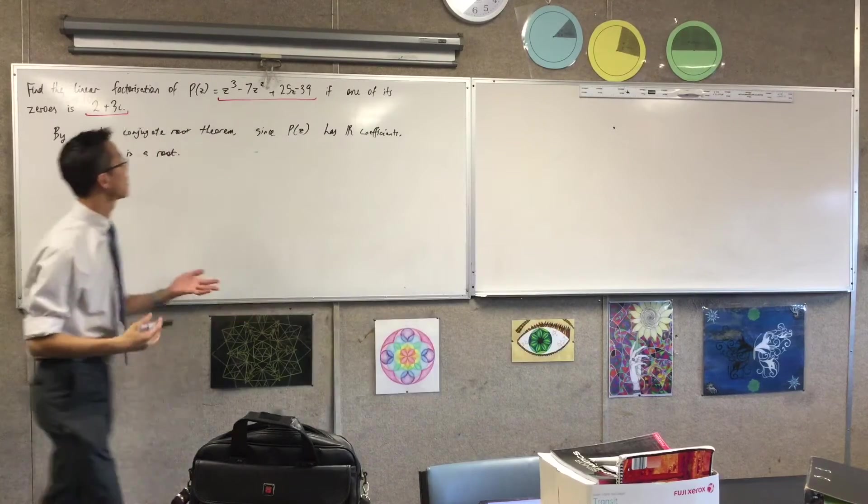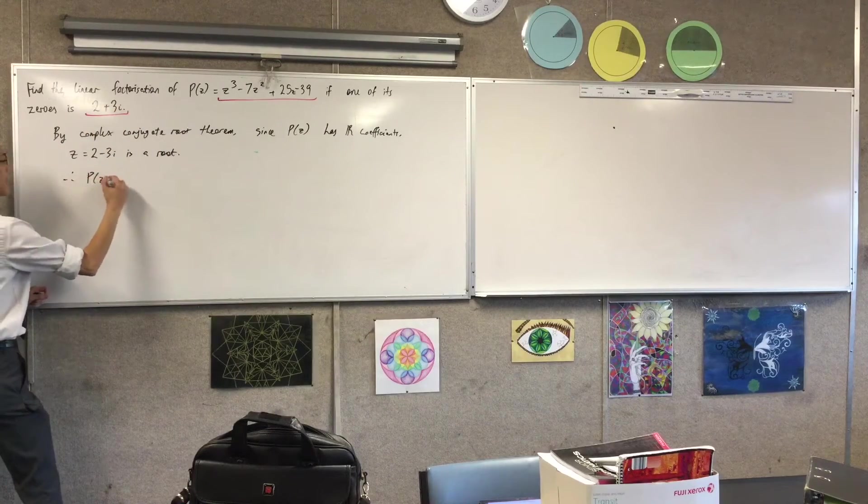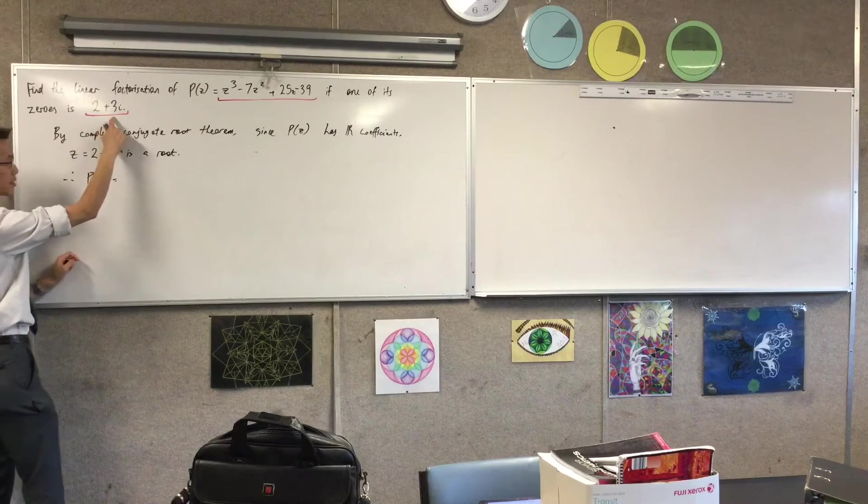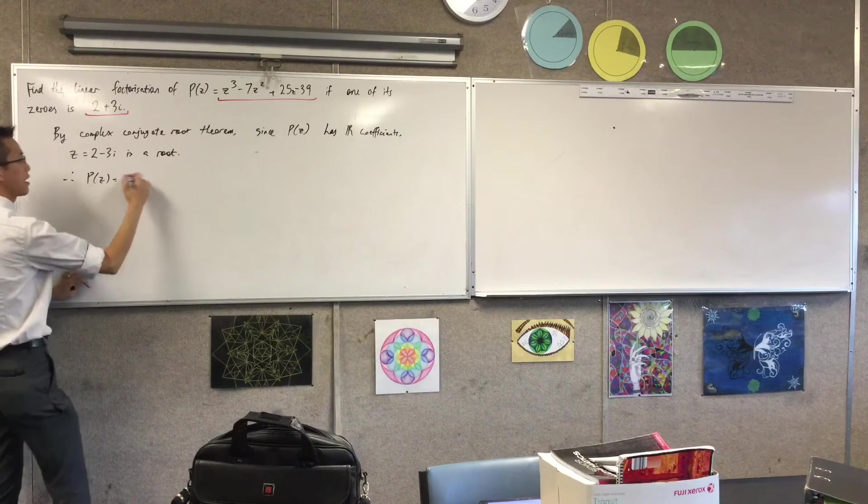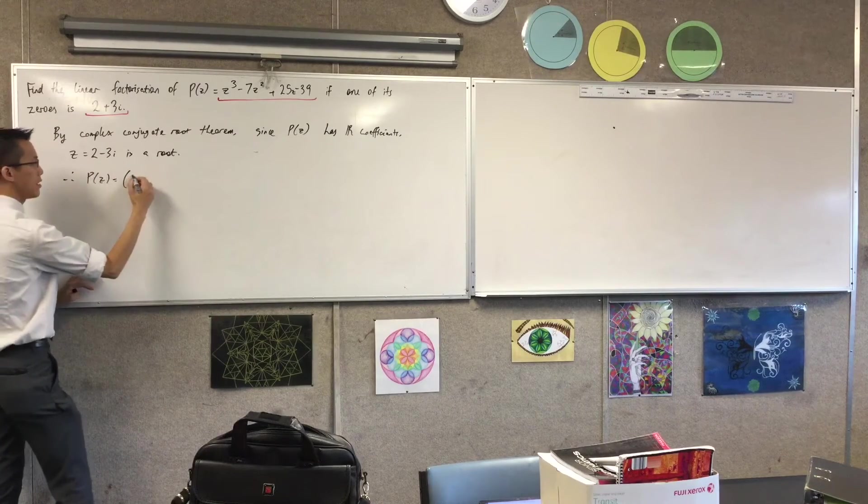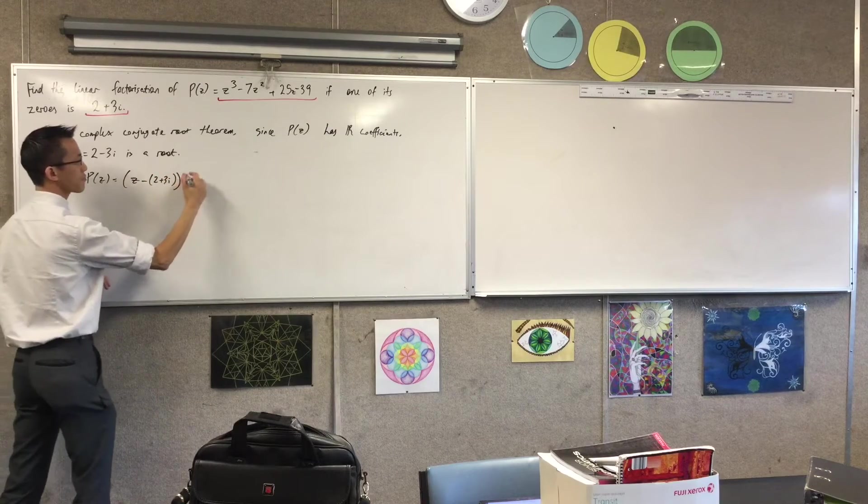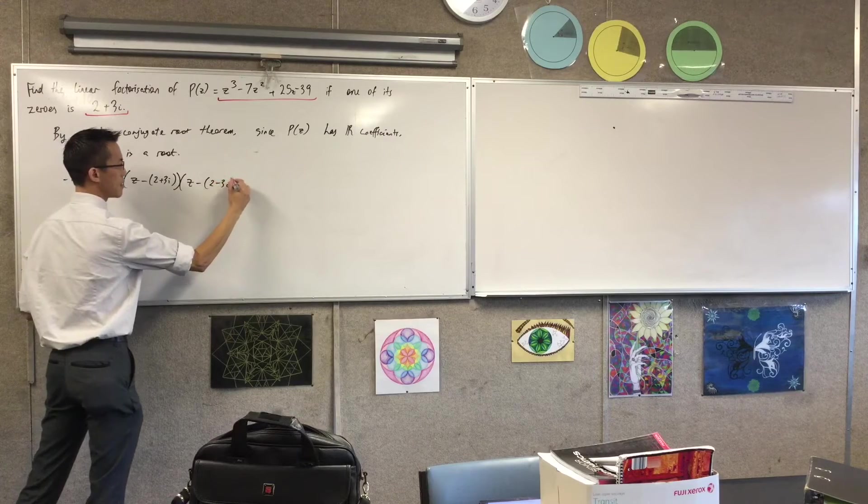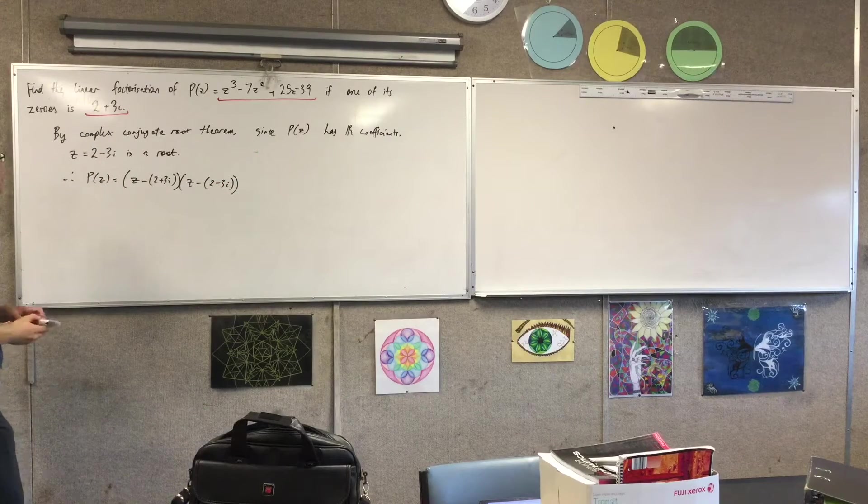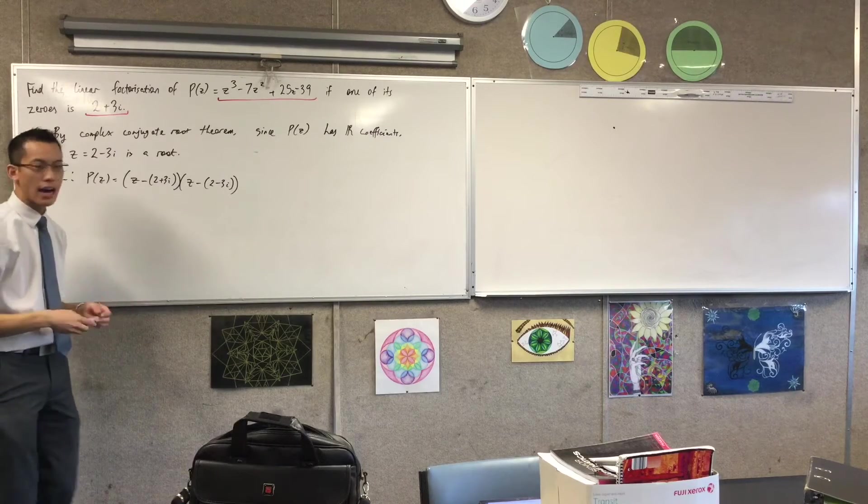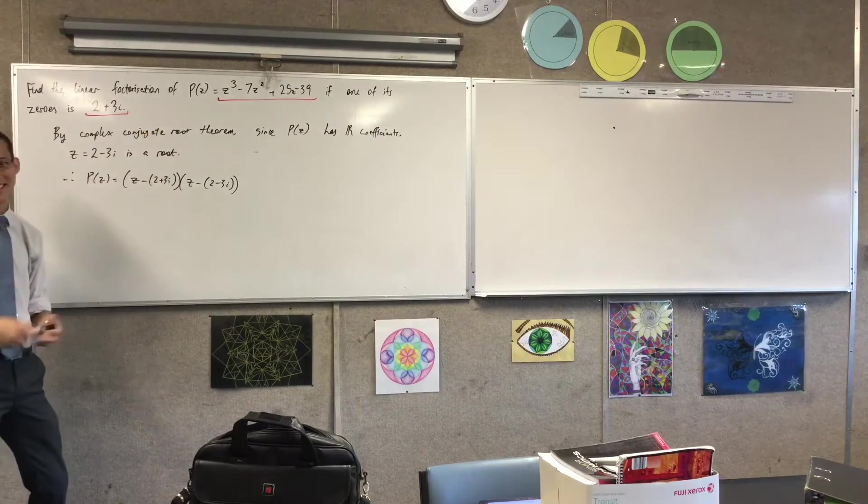Now that I know these two, that tells me something about the factorization. So I can say therefore P(z) equals—I've got z minus this, z minus that, and then some quotient along the end. Just watch out in brackets and signs here. I'm going to write it as z minus this, z minus this.